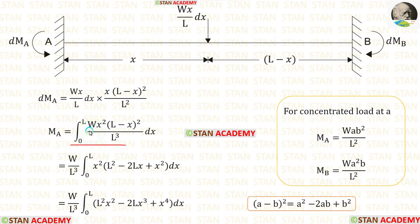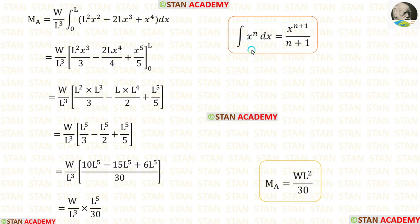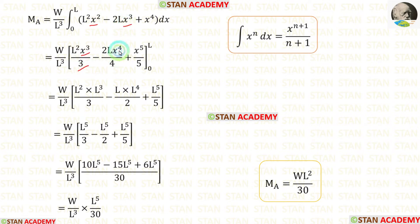Taking W and L cube outside as constants, we expand (L − X)² using the formula A² − 2AB + B², then multiply through by X². Integrating term by term: X² gives X³/3, X³ gives X⁴/4, and X⁴ gives X⁵/5. Then we apply the limits, ignoring the lower limit 0 since it yields zero, and apply the upper limit L.